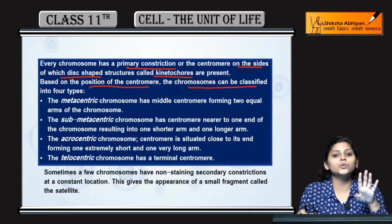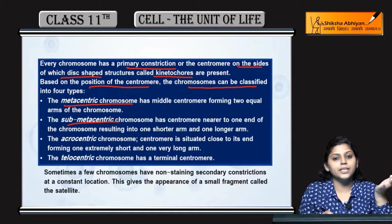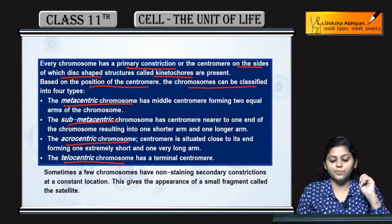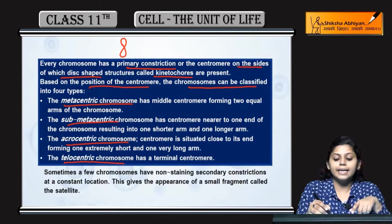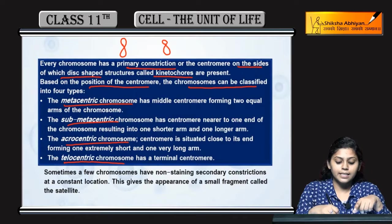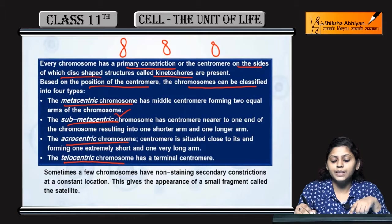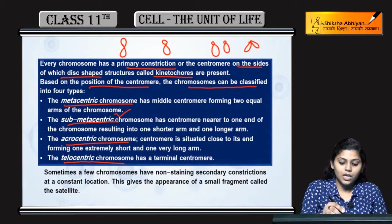On the basis of position of centromere, chromosomes can be classified into four major types: metacentric, submetacentric, acrocentric, and telocentric chromosome. Metacentric mein chromosomes ki dono arms equal hoti hain. Agar ek arm thodi choti aur doosri thodi badi hai, to submetacentric. Agar ek arm bahut choti aur doosri bahut badi hai, to acrocentric. Agar terminal position pe centromere present ho, to telocentric.